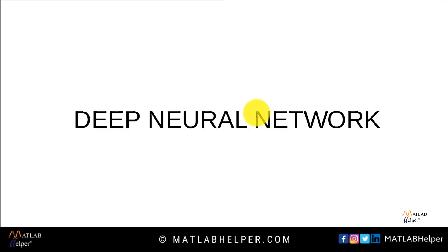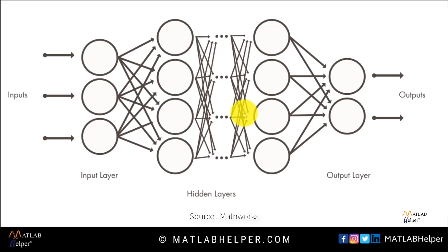Firstly, we shall see what is a deep neural network. A deep neural network combines multiple layers using simple elements in parallel, which is similar to the human nervous system. It has one input layer, one output layer, and many hidden layers in between.